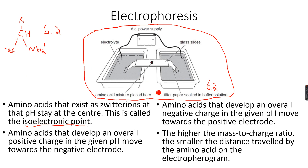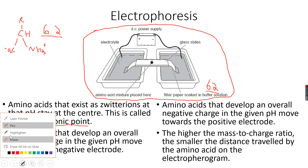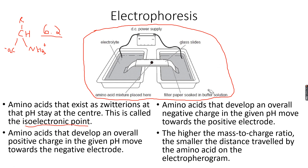It stays at the center because it can neither go towards the positive side nor the negative side, since it has no overall charge. This is because the pH of the buffer solution was the same as the isoelectric point. But what if, for the same amino acid, the pH of the buffer solution is 8? Now the pH of the buffer solution is 8, meaning it is more alkaline than the amino acid's isoelectric point.